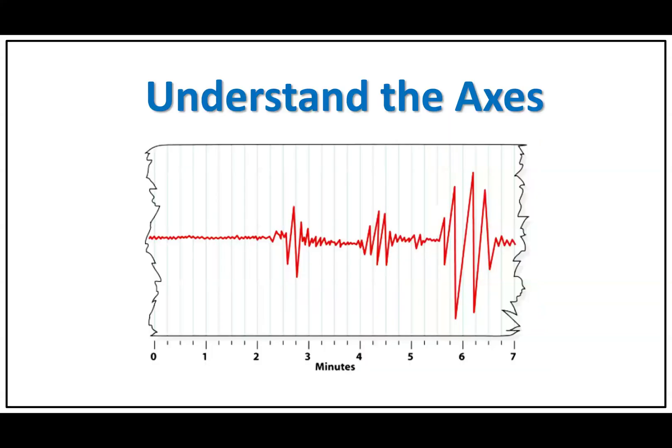Understand the axes. A seismogram typically consists of a graph with two axes. The horizontal axis represents time, usually measured in seconds, minutes, or hours. The vertical axis represents the amplitude or intensity of the recorded seismic waves, typically measured in millimeters or micrometers.